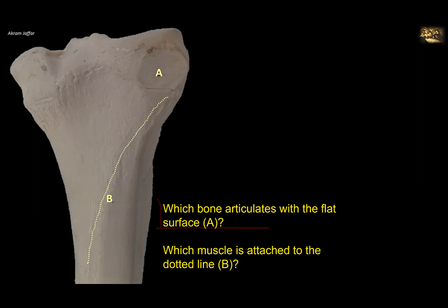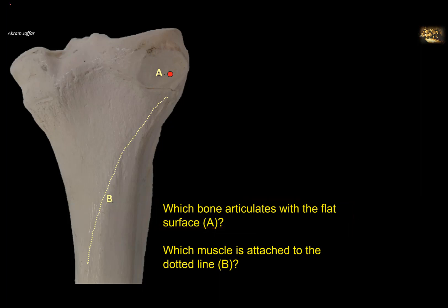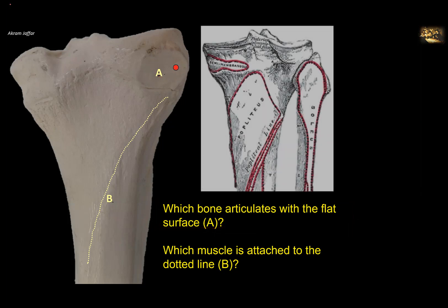Which bone articulates with the flat surface A? This is the flat surface for the head of the fibula, forming the proximal or superior tibiofibular joint. You can see it is separated from the surface of the knee joint, and these two joints are separate from each other.